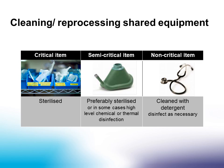Another element of removing an organism is in the cleaning and reprocessing of shared patient equipment. Shared patient equipment can be implicated in the transmission of pathogens between patients and requires appropriate reprocessing according to its intended use and manufacturer's instructions. There are three categories of items in patient care, and each requires a different level of reprocessing according to the risk.